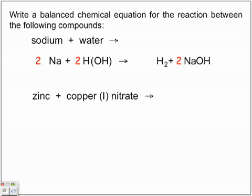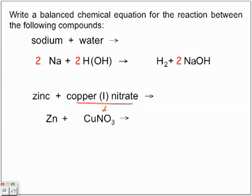Zinc plus copper(I) nitrate. We need to keep in mind all the types of naming we've studied — ionic and polyatomic. We have zinc, the metal, and copper(I) nitrate as the non-metal/metal compound. We write out the formula using the crossover rule to identify CuNO₃.